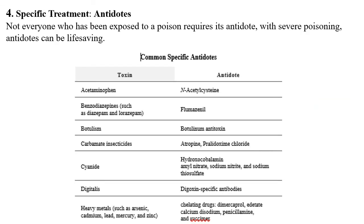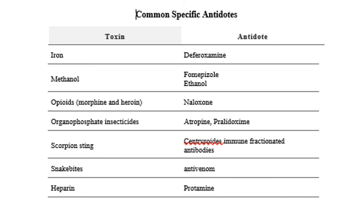Depending on the specific chemical, a specific antidote is chosen. Examples: acetaminophen — acetylcysteine; benzodiazepines — flumazenil; botulinum — botulinum antitoxin; cyanide — hydroxocobalamin; digitalis — digitalis antibodies; heavy metals — chelating drugs; iron toxicity — deferoxamine; methanol — ethanol and fomepizole; opioids — naloxone; organophosphates — atropine; snake bite — antivenom; heparin — protamine.